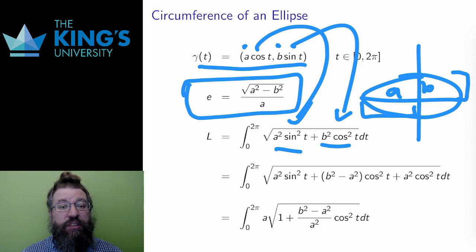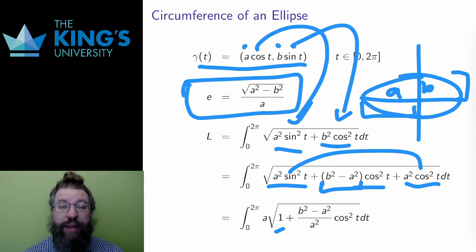I'll add and subtract a squared cosine squared t inside the square root and then I'll group the terms. The result leads to a sine squared plus cosine squared which simplifies to 1 and I can also pull a squared out by dividing by a squared in the remaining term and this is the result of those algebraic manipulations.